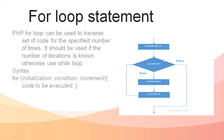If we talk about the flowchart, it begins with initialization, then the condition is tested. If the condition is true, the statement executes, and depending on how many times you want to execute it, increment or decrement is applied. It will execute until the condition is true. Otherwise, if the condition doesn't match, it goes to the termination point.